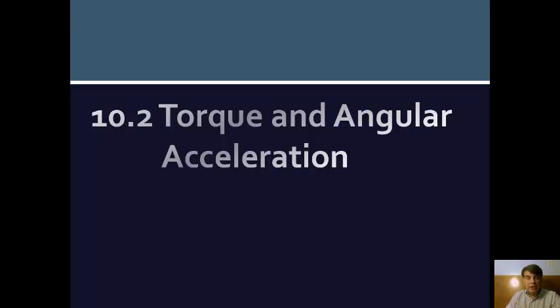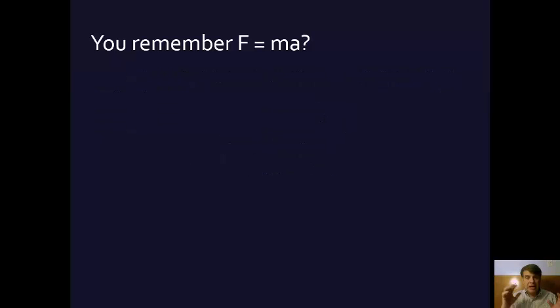And so basically what is introduced in this section is an analogy in rotation to Newton's second law. So you remember Newton's second law which says that force equals mass times acceleration, or if you want to put it in a slightly more sophisticated mathematical form, the sum of the forces on something is equal to the mass of that something times its acceleration. So that's the basic Newton's second law formula, F equals MA.